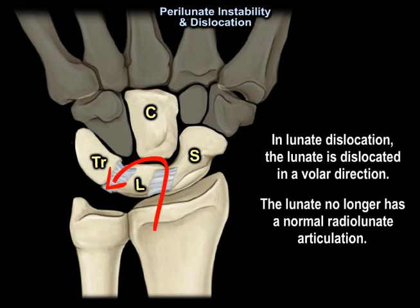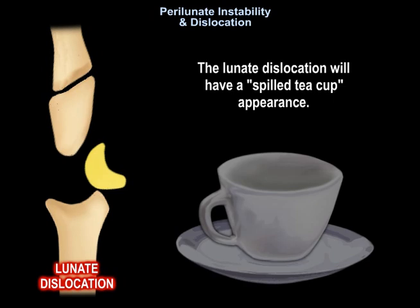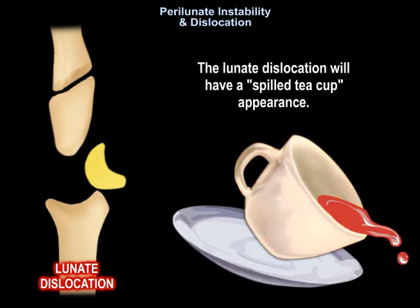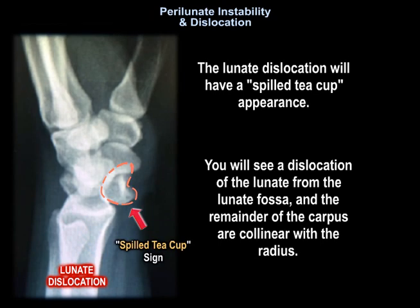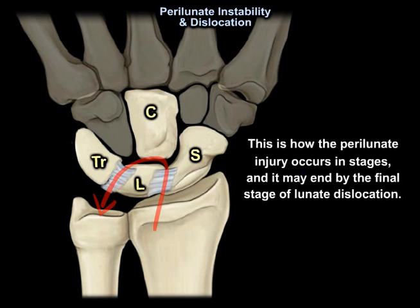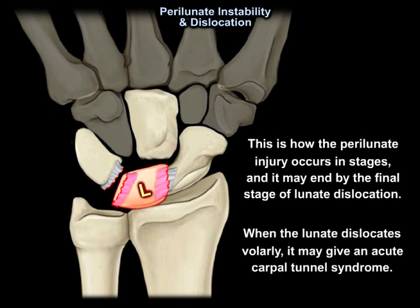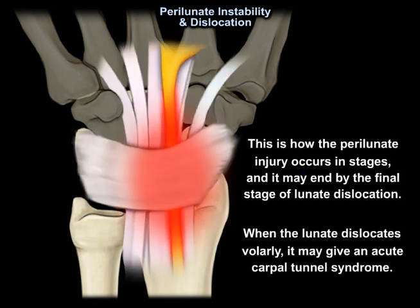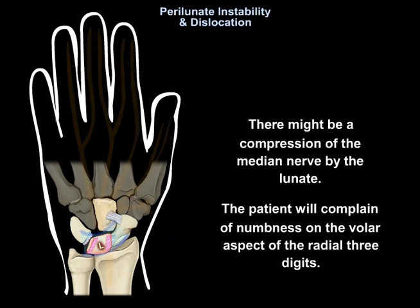In lunate dislocation, the lunate is dislocated in a volar direction and no longer has a normal radiolunate articulation. The lunate dislocation will have a spilled teacup appearance — dislocation of the lunate from the lunate fossa while the remainder of the carpus remains collinear with the radius. When the lunate dislocates volarly, it may cause acute carpal tunnel syndrome with compression of the median nerve, and the patient will complain of numbness on the volar aspect of the radial three digits.